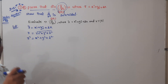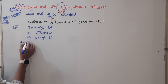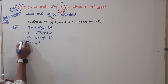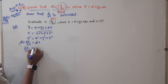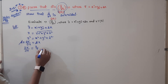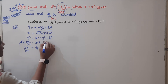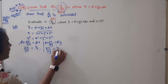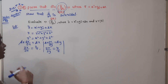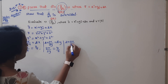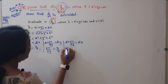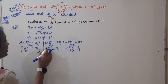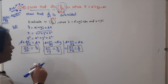Now, with respect to x, differentiating r² = x² + y² + z² partially: 2r · (∂r/∂x) = 2x, and the y and z terms are 0. So ∂r/∂x = x/r. Same way, differentiating with respect to y: 2r · (∂r/∂y) = 2y, so ∂r/∂y = y/r. And differentiating with respect to z: 2r · (∂r/∂z) = 2z, so ∂r/∂z = z/r.